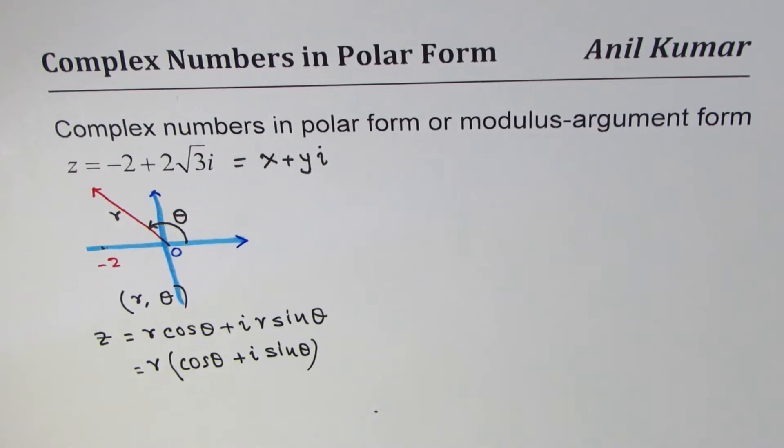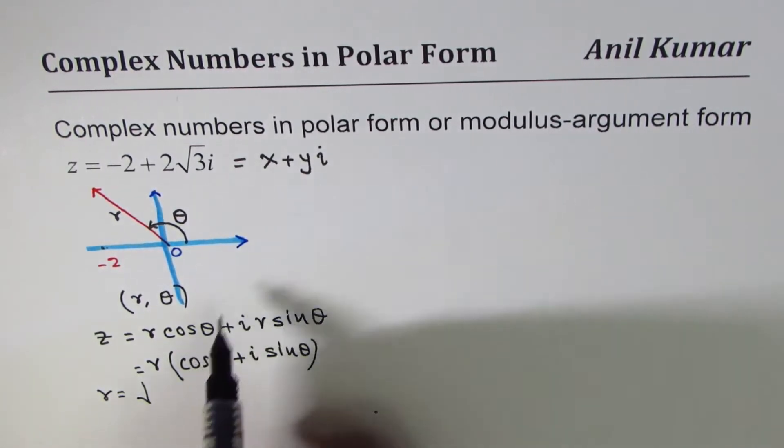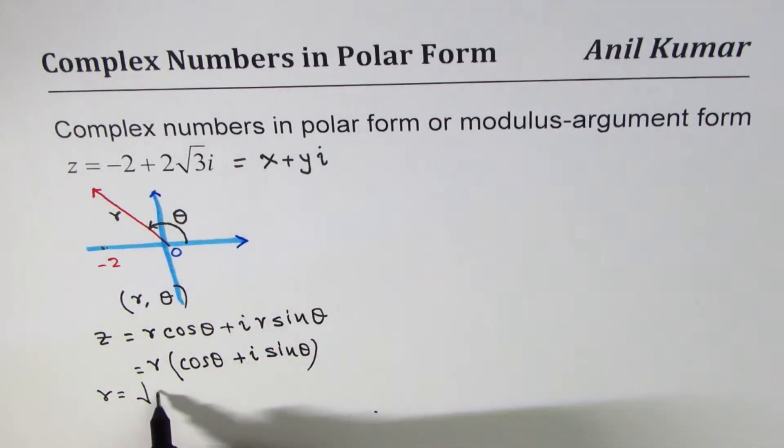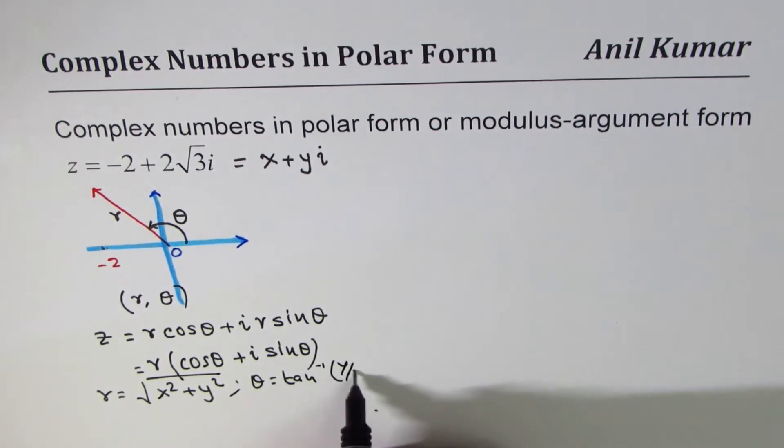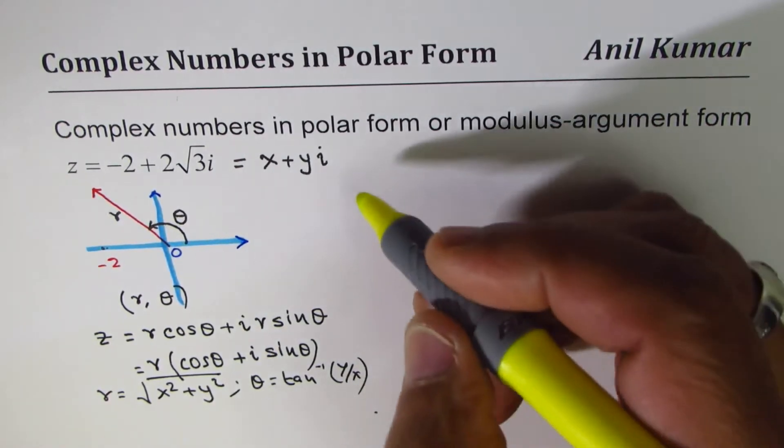Now here, of course, you can find r as square root of x square plus y square, and theta as tan inverse of y over x. Or you can say tan theta is y over x, so theta is tan inverse of y over x.